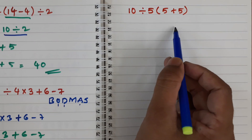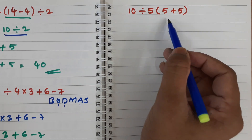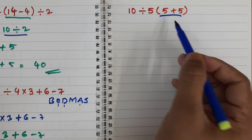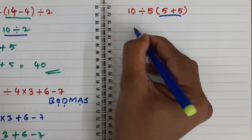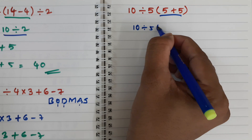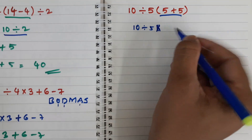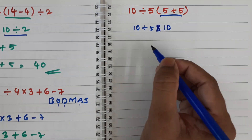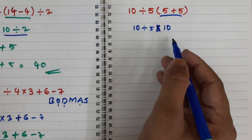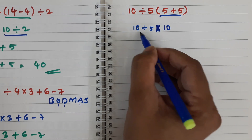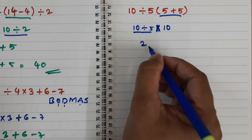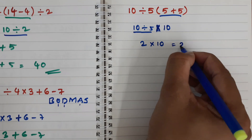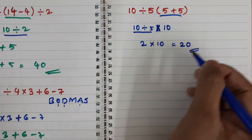Next expression: 10 divided by 5 into (5 plus 5). Let us solve using BODMAS. Bracket first: 5 plus 5 is 10. No order of. Division: 10 divided by 5 is 2. Then multiplication: 2 into 10 is 20. So the answer is 20.